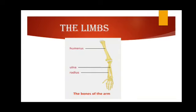Each hand contains 27 bones — 8 bones in the wrist and 19 bones in the palm and fingers. That is why you will see that there is a lot of movement in your palm and fingers, because it is made up of very small bones, giving you a lot of movement.